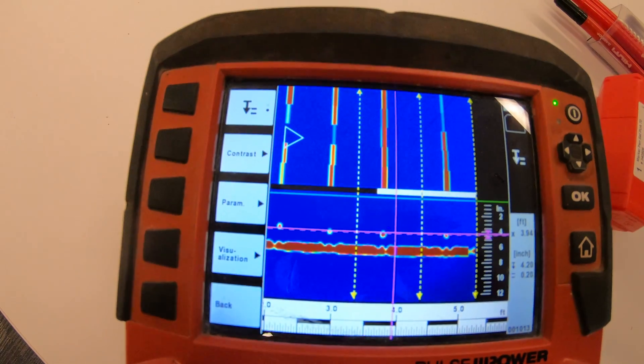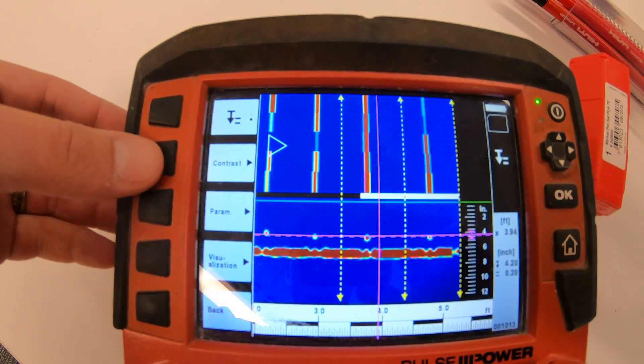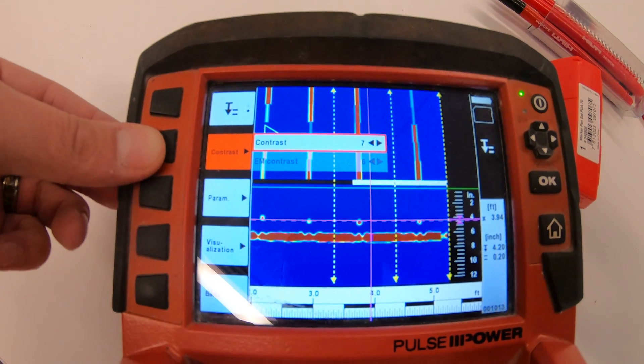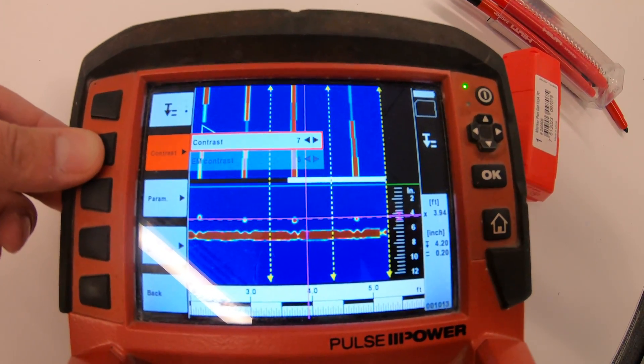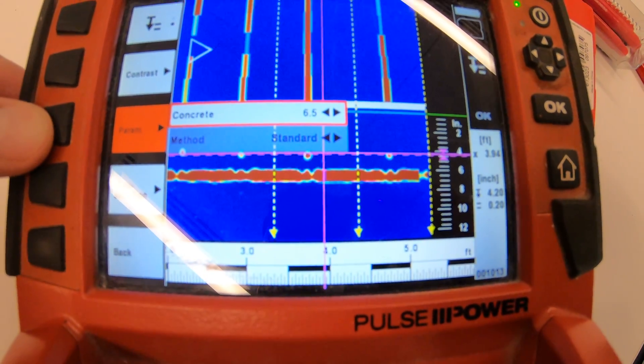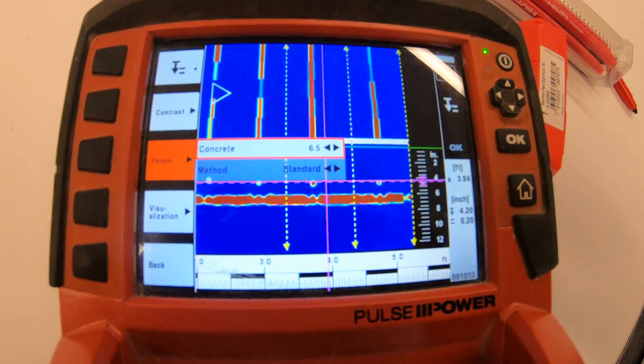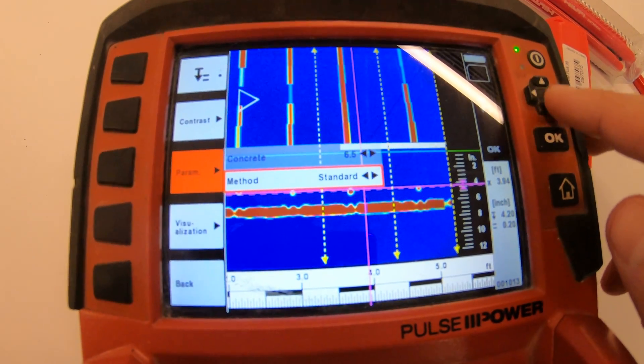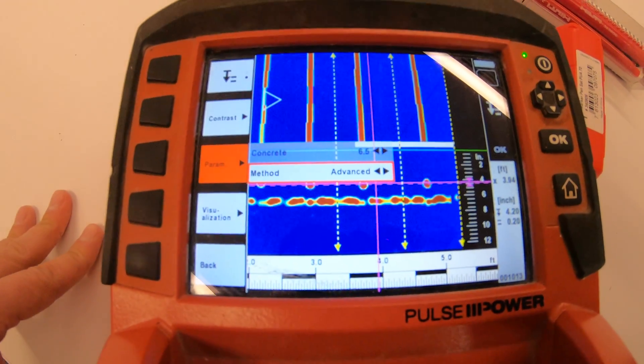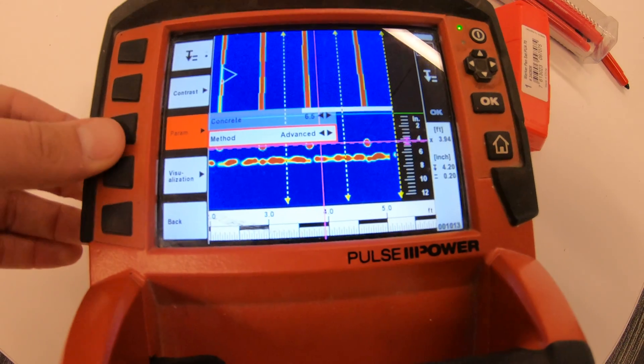Okay, so now what I'll do is just show you again—you still have your contrast views just like you did in the quick scan. The lower contrast I like for when I'm doing quick scans. You have your parameters to adjust your concrete level if so needed—what we call the dielectric. You can also change your view here from standard to advanced. Okay, and I went over in the other video what those meant, so I don't want to repeat myself.